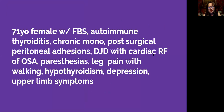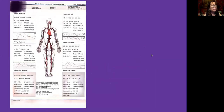The next case is a 71-year-old female with a history of fibromyalgia, autoimmune thyroiditis, chronic mono, post-surgical peritoneal adhesions, degenerative joint disease, and cardiac risk factors including obstructive sleep apnea, paresthesias, leg pain with walking, hypothyroidism, depression, and upper limb symptoms. On her arterial vascular assessment, she had an abnormal ABI in the right leg.